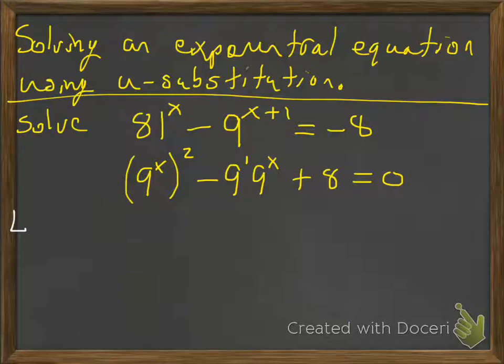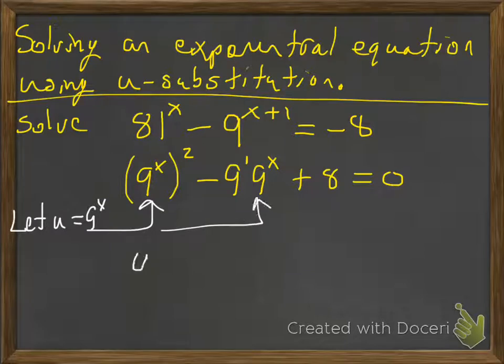Now the 9^x looks like a good candidate for the u. So u is going to be 9^x. So we're going to replace that. So it's u^2 minus 9u plus 8, and lo and behold, we can factor that. Factors into u minus 8, u minus 1.